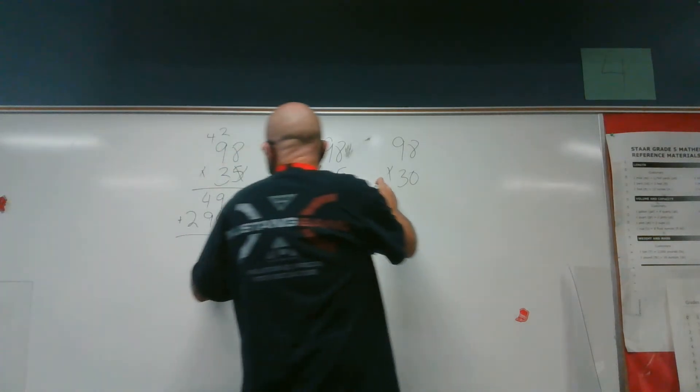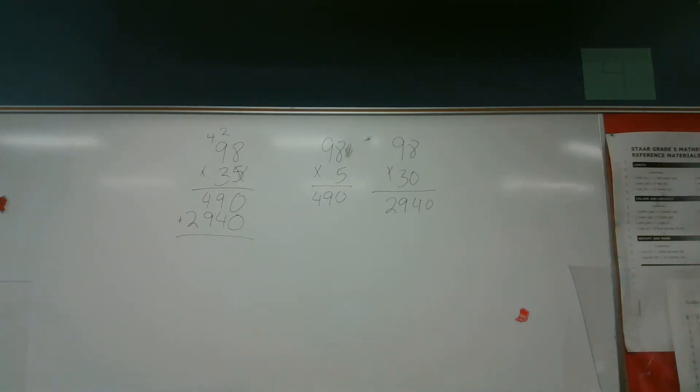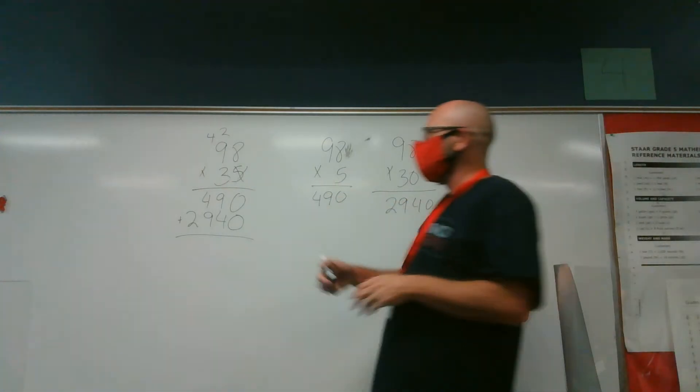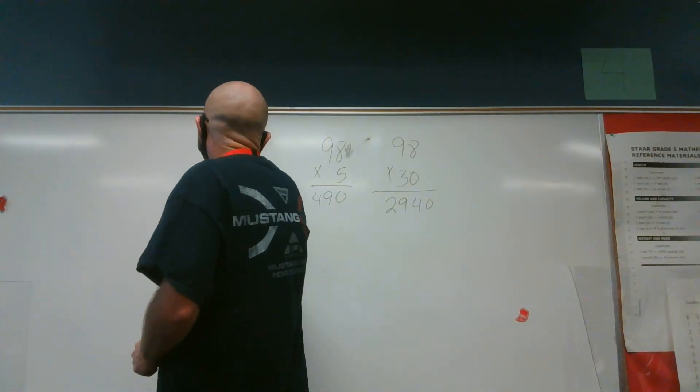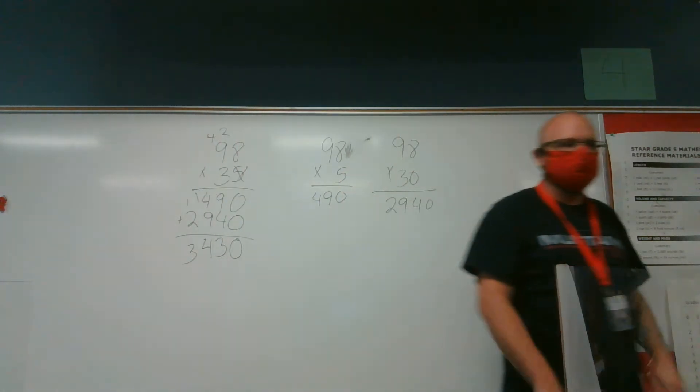So I can tell you right now that this is 2,940. If you can read a multiplication chart, or you know your 0 through 9 multiplication facts, it does not matter how big the factors are. It doesn't matter. Now I just find the sum of these two products. I have zero, I have 13, I have 14, I have 3. 3,430.